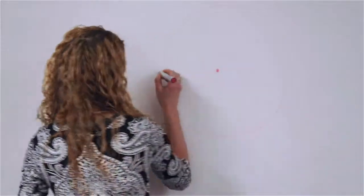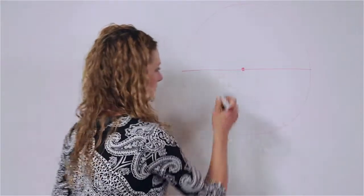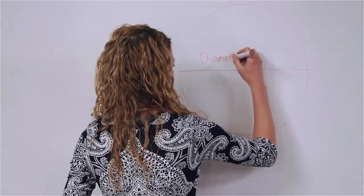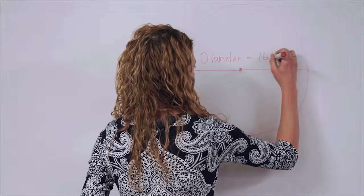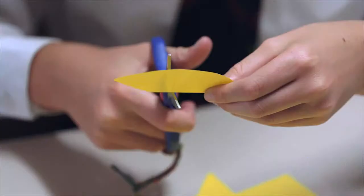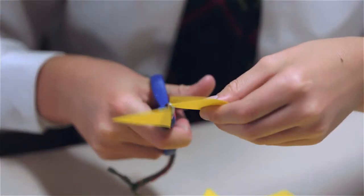With the yellow bit of paper, I want you to divide it into eight equal sections. So how you do that is do quarters and then quarters again.